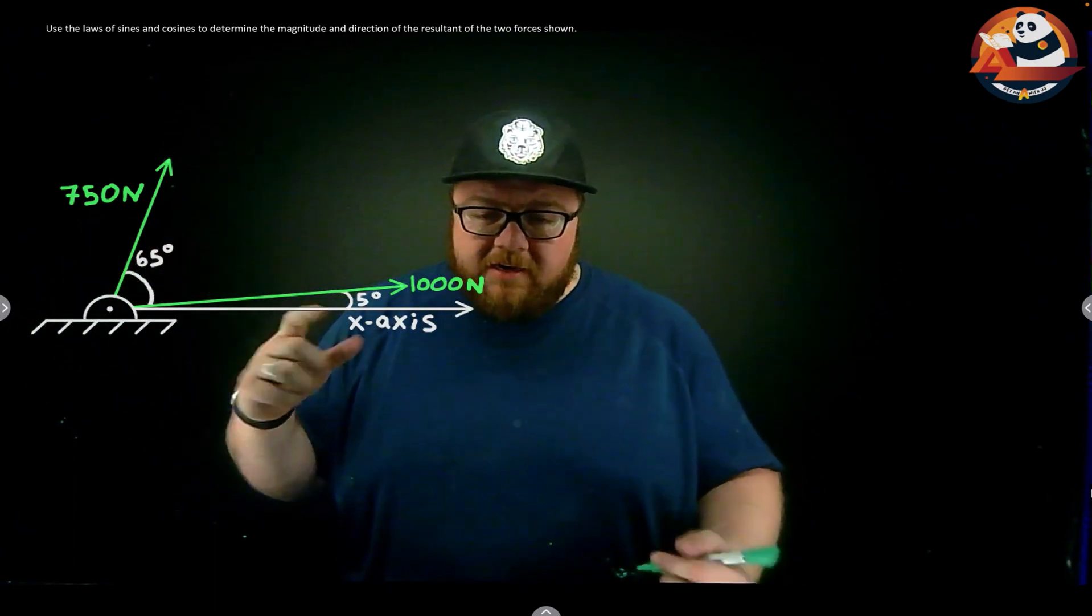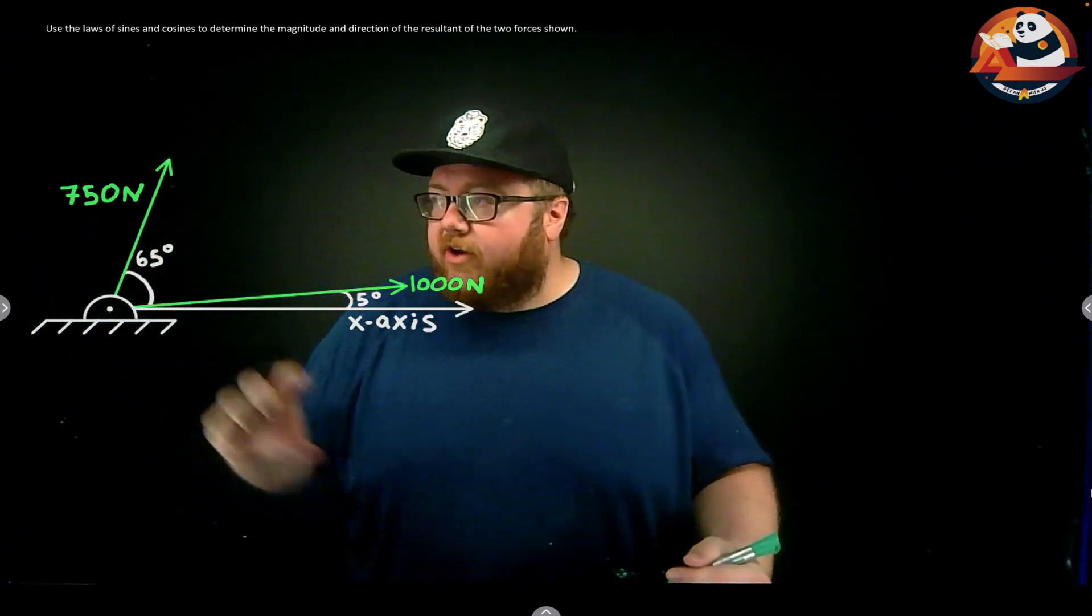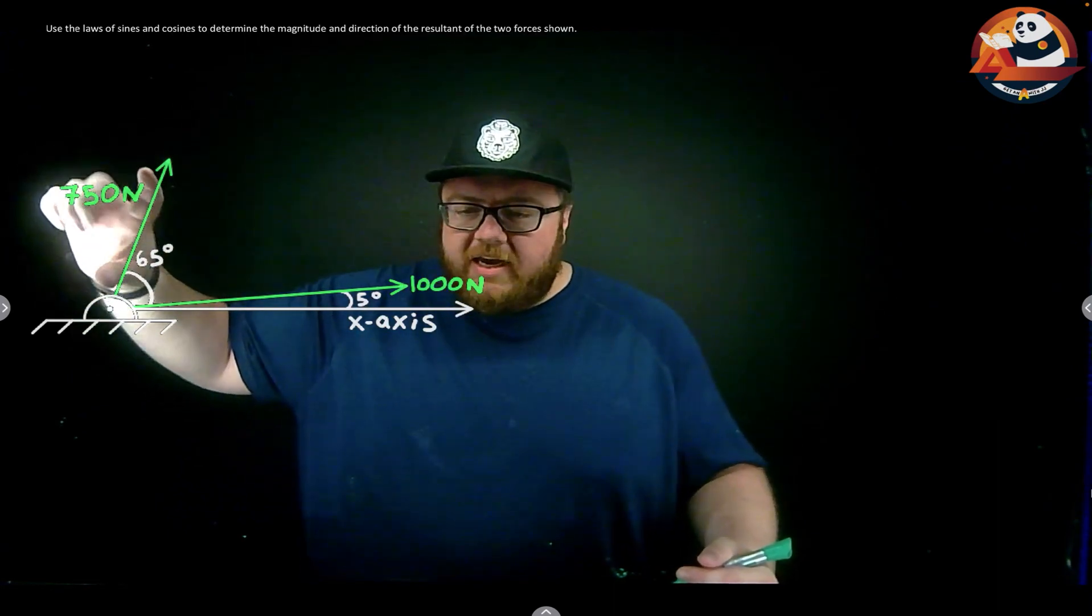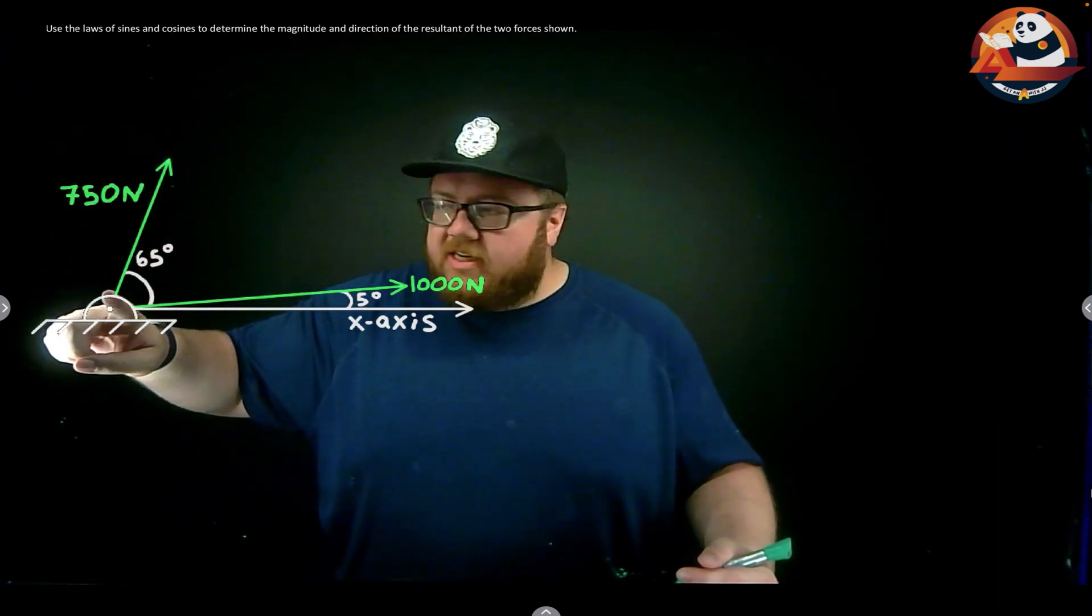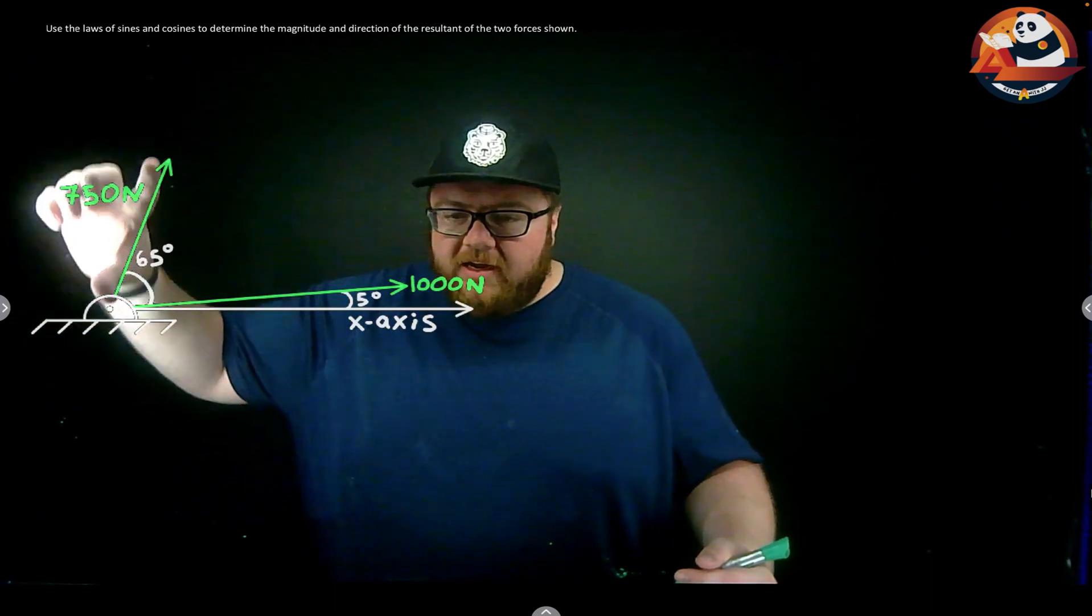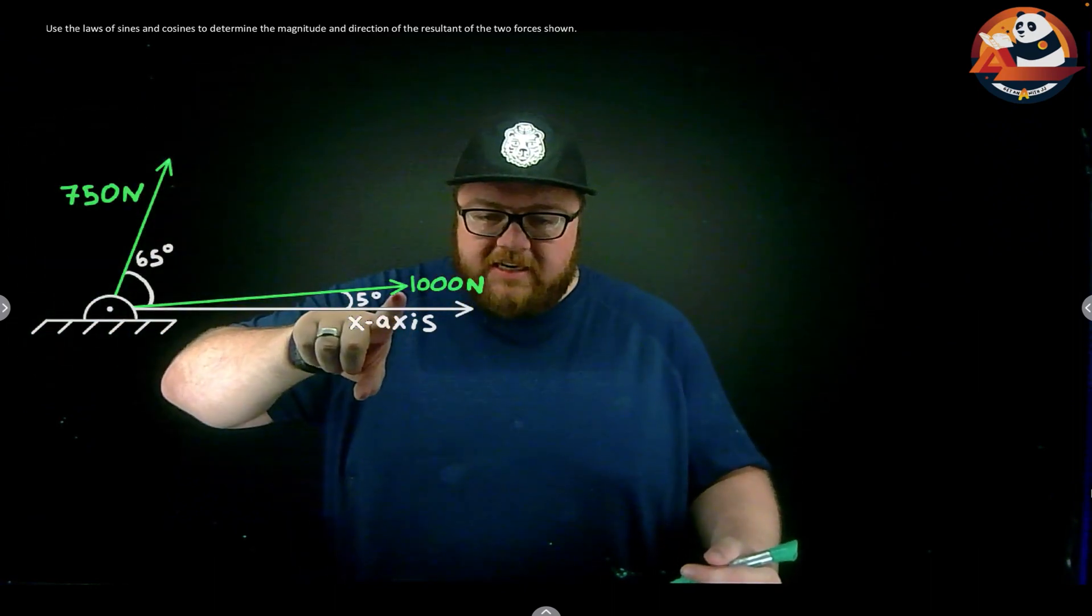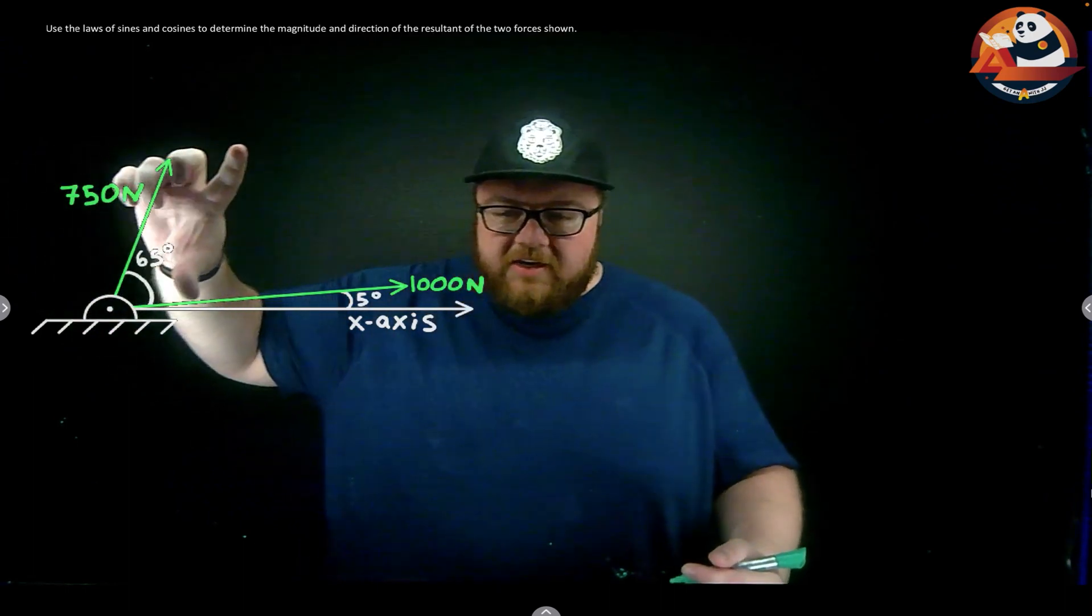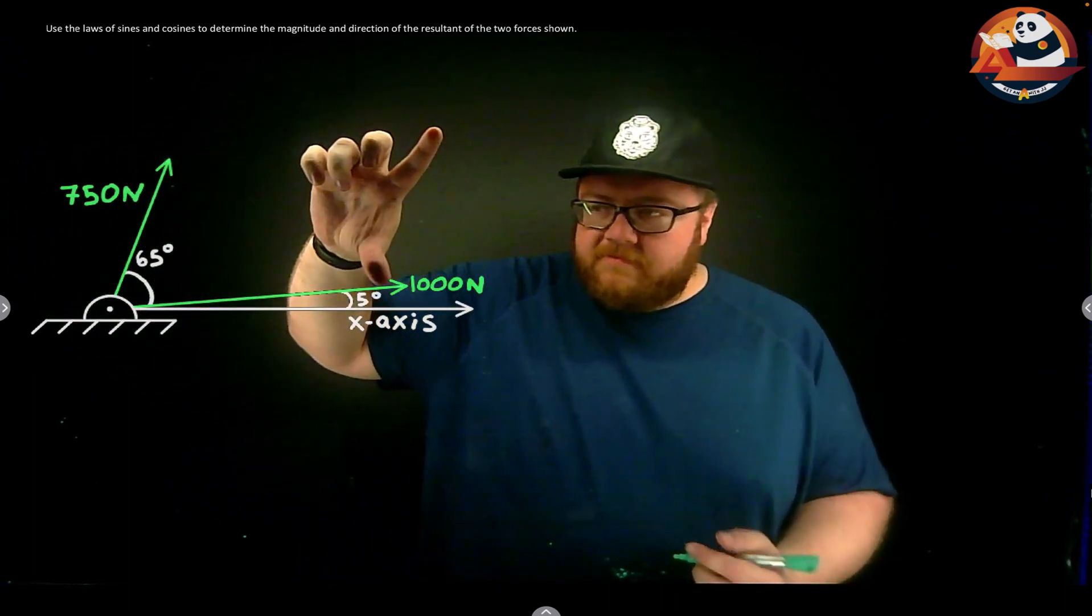I'm going to take the 750 newton force and just slide it so that the tail (the side without an arrowhead) touches the tip (the side that has an arrowhead) of my other vector. Take that 750 and just slide it to right here.